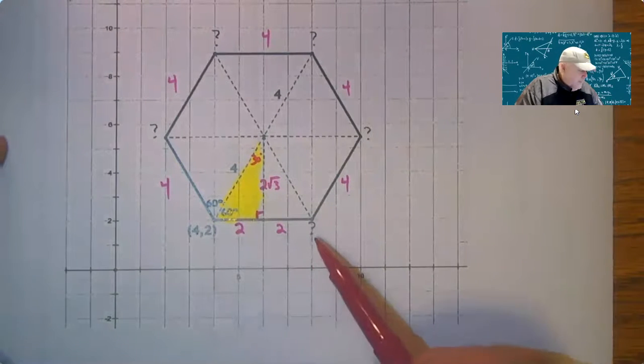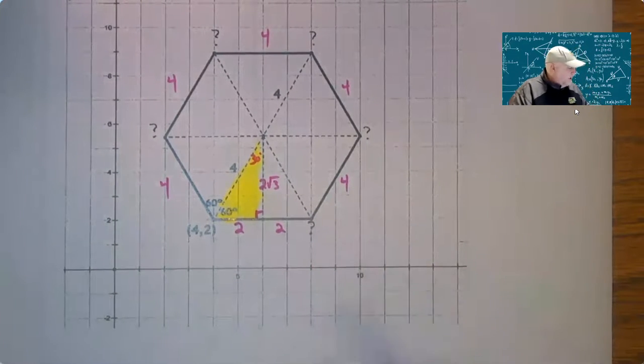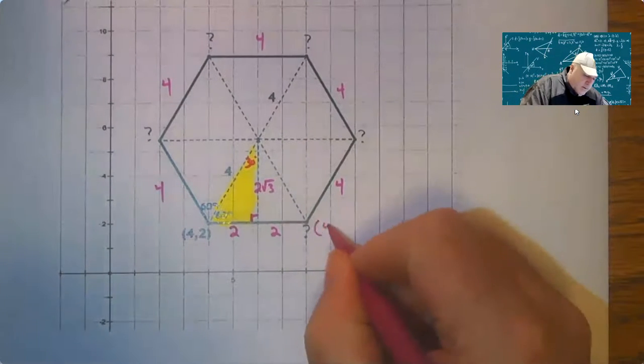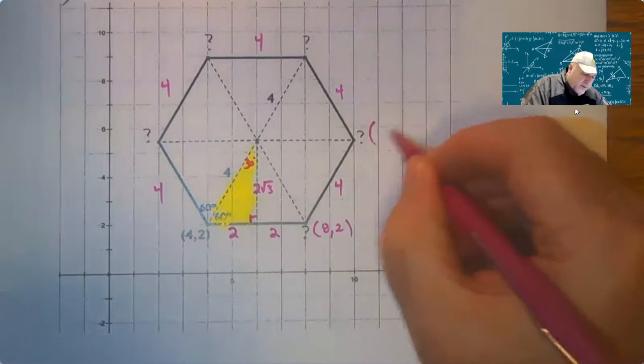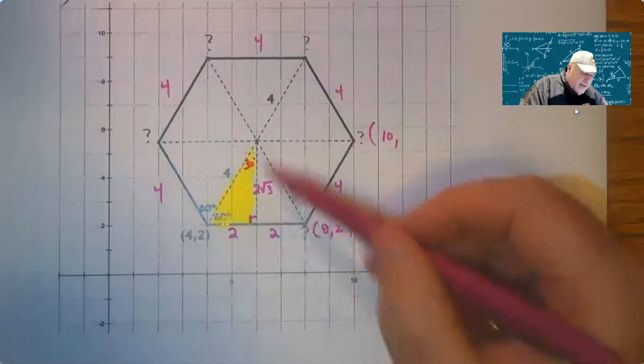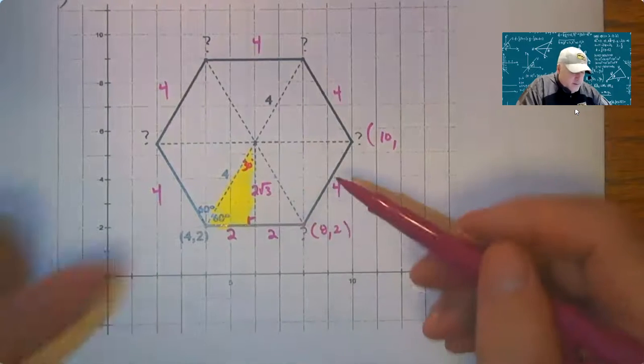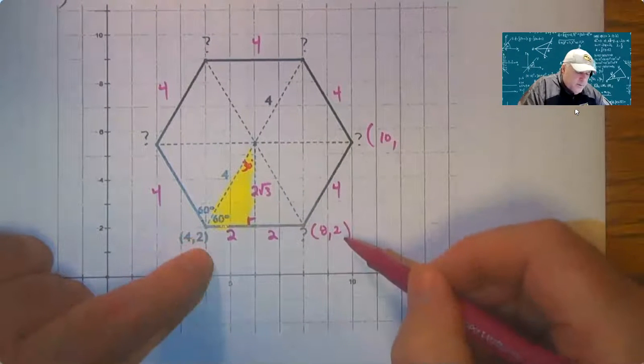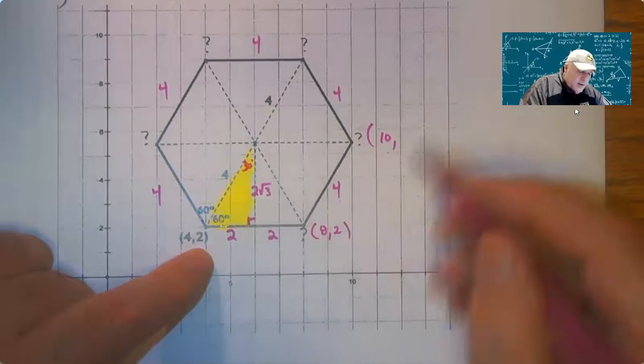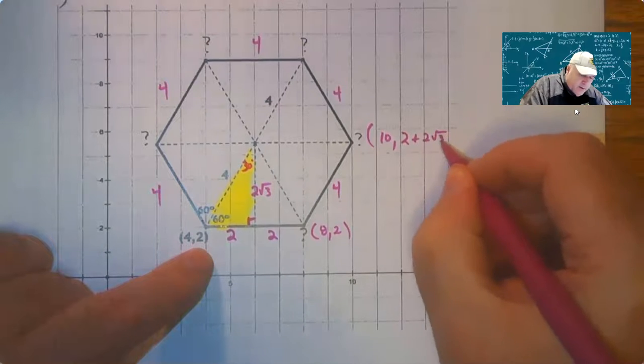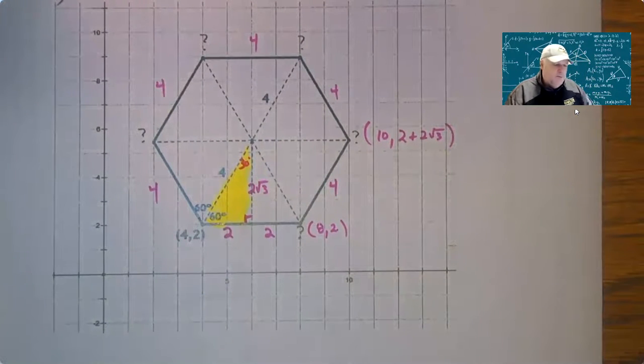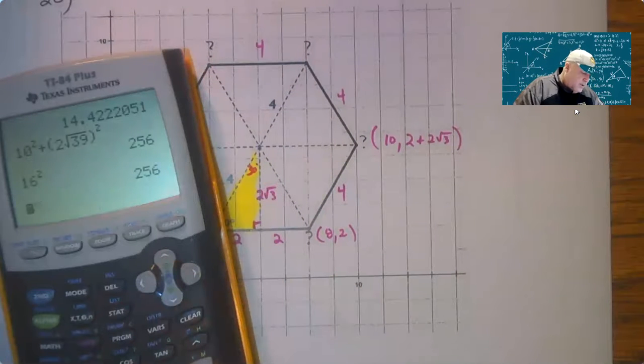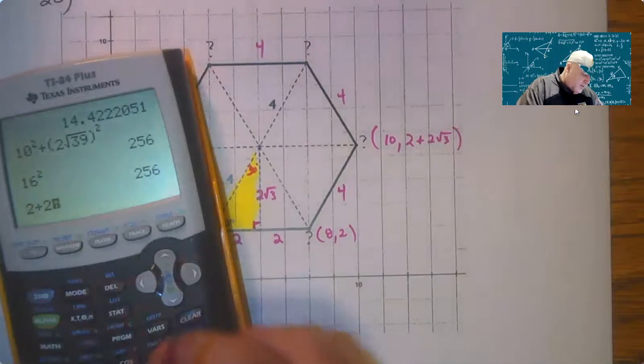Now that you know these lengths, you're actually able to figure out what all these coordinates would be. So obviously here I'm just going four more to the right and this would be eight, two. This one right here. And then here I'm going two more to the right. So this would be ten, but then I'm adding two times the square root of three to this y value of two here. So in my answer key, I put two plus two times the square root of three, you can do a decimal. Okay, if you wanted to for that, that's perfectly okay.